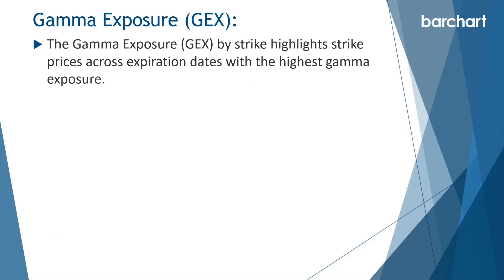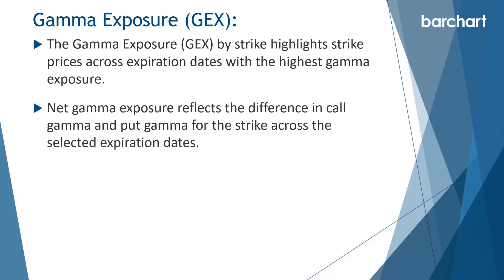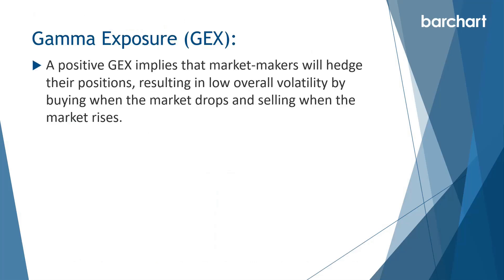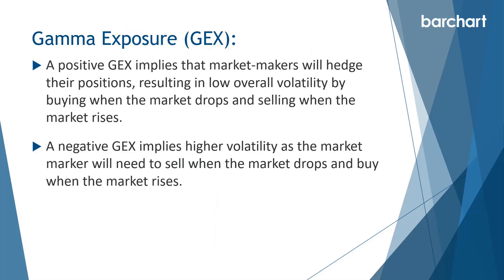The gamma exposure by strike highlights strike prices across expiration dates with the highest gamma exposure. Net gamma exposure reflects the difference in call and put gamma for the strike across selected expiration dates. You can see the positive gamma for calls in blue and the negative gamma for puts in yellow. For Amazon overall there's a lot of positive gamma — the blue bars are much bigger than the yellow bars. Positive GEX implies market makers will hedge by buying when the market drops and selling when the market rises, resulting in low overall volatility. Negative GEX implies higher volatility, as market makers will sell when the market drops and buy when it rises, creating that feedback loop we saw with GameStop.